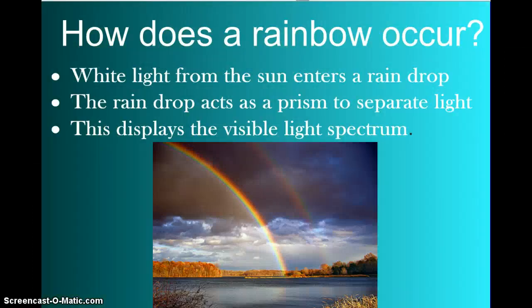How does a rainbow occur, though? Anytime that white light from the sun enters a raindrop, or a drop of water from, say, a sprinkler, perhaps. The raindrop acts as a prism to separate the light. This displays the visible light spectrum. Okay? So, this can happen really with any water, because water acts as a prism, in this case. It bends the light.